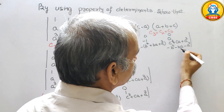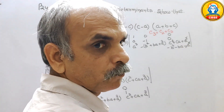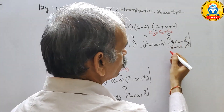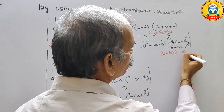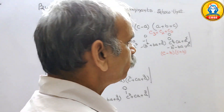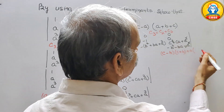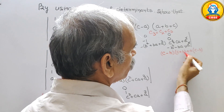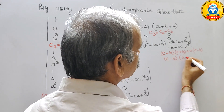Now we factor the third column entry: c² minus b² factors as (c minus b)(c plus b), and ca minus ba factors as a(c minus b). Taking (c minus b) as common from both terms gives (c minus b)(c plus b plus a), which is (c minus b)(a plus b plus c).